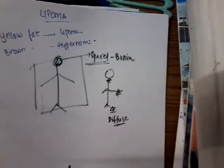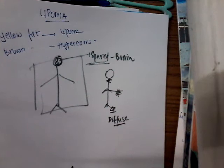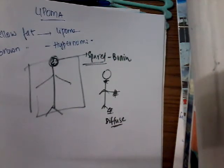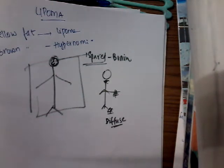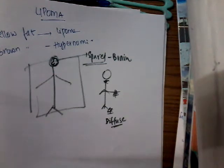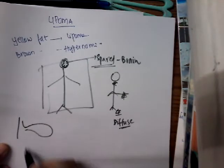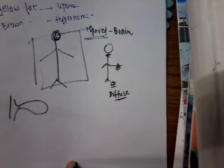Sometimes lipoma can be multiple or single. Lipoma can be associated with other tissues. Whenever lipoma is associated with fibrous tissue, it is called fibrolipoma. If the lipoma is pedunculated, that is called pedunculated lipoma, also known as lipoma arborescens.